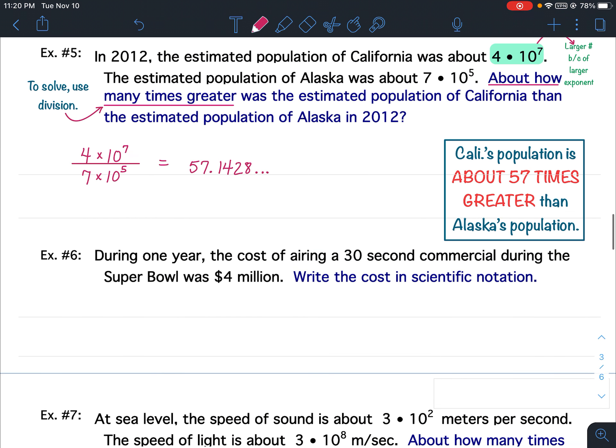So, again, I took the larger number, divided it by the smaller number. I put it in the calculator, got to 57.1428. That kept going. And then I rounded it to 57 to get my answer. If you have any questions on example number 5, please let me know.